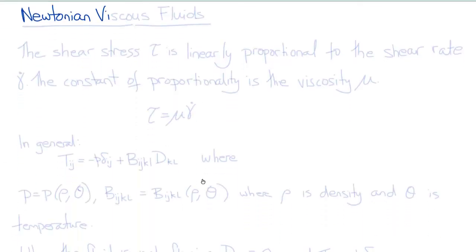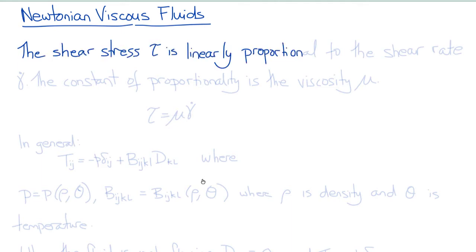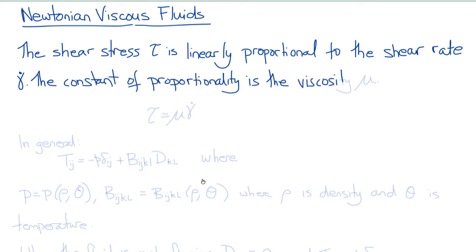Our first example of a constitutive equation will be the constitutive equation for a Newtonian viscous fluid. In a Newtonian or linear viscous fluid, the shear stress tau is linearly proportional to the shear rate gamma dot, and the constant of proportionality is called the viscosity mu. Thus, for a linear viscous fluid, we can write tau equals mu gamma dot, where mu is a constant.